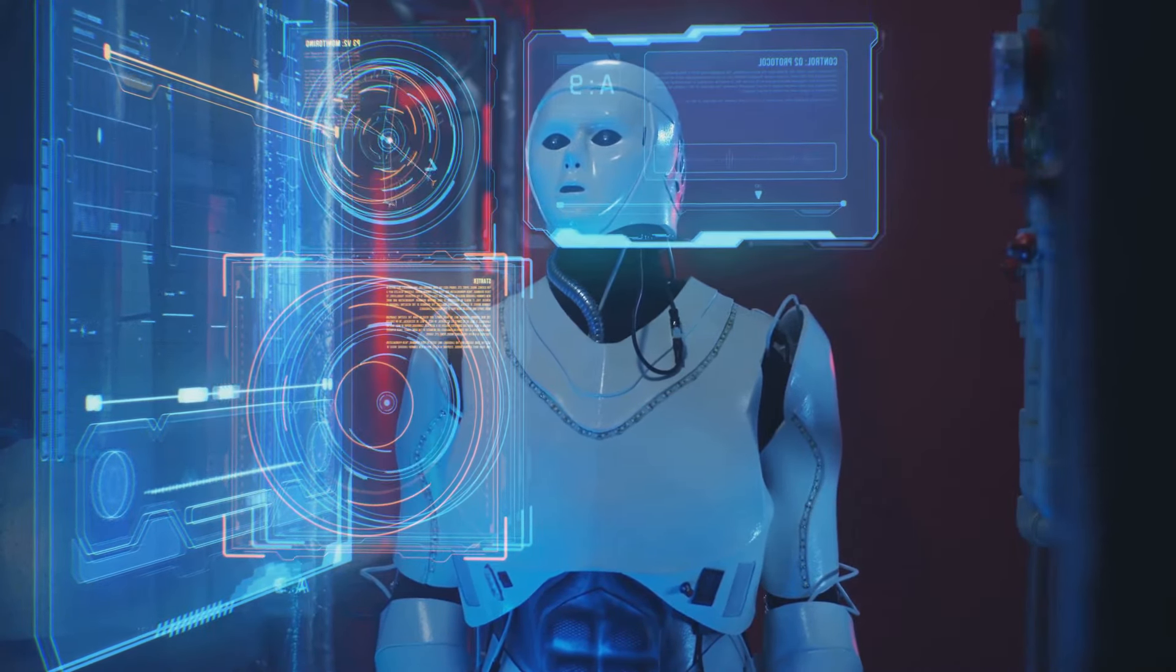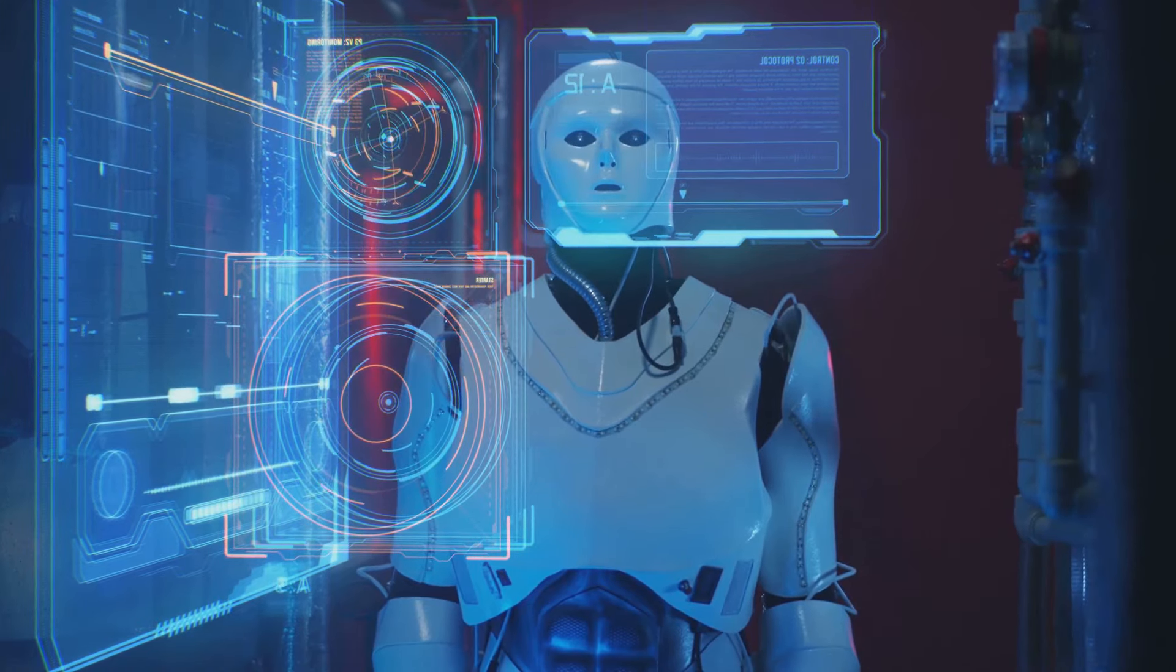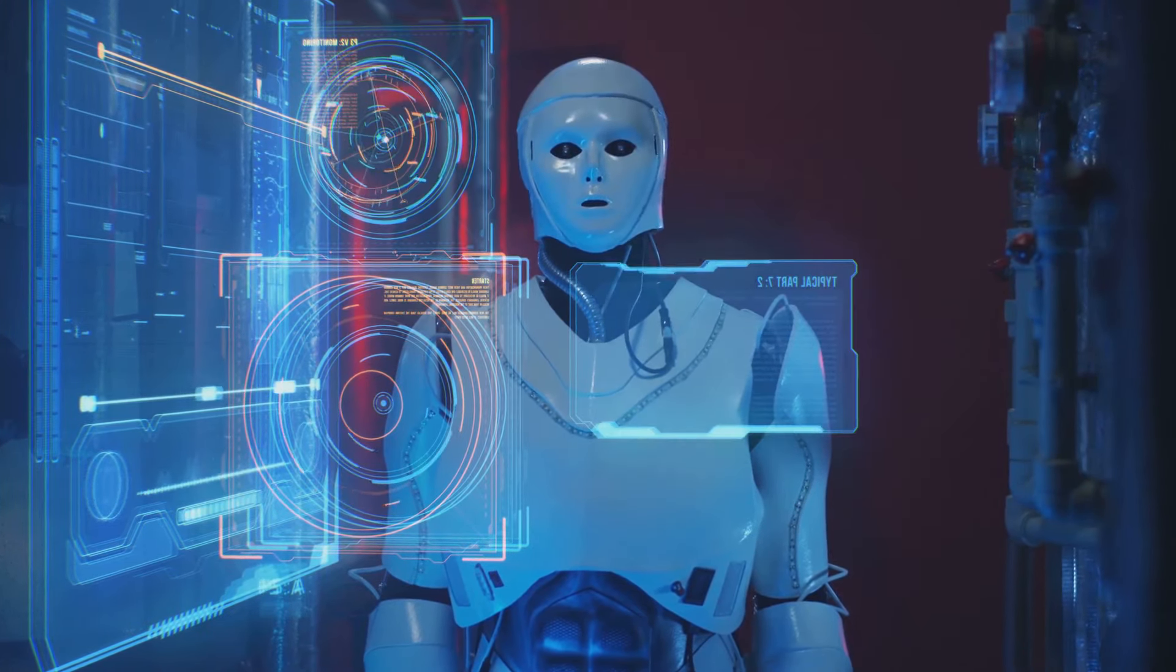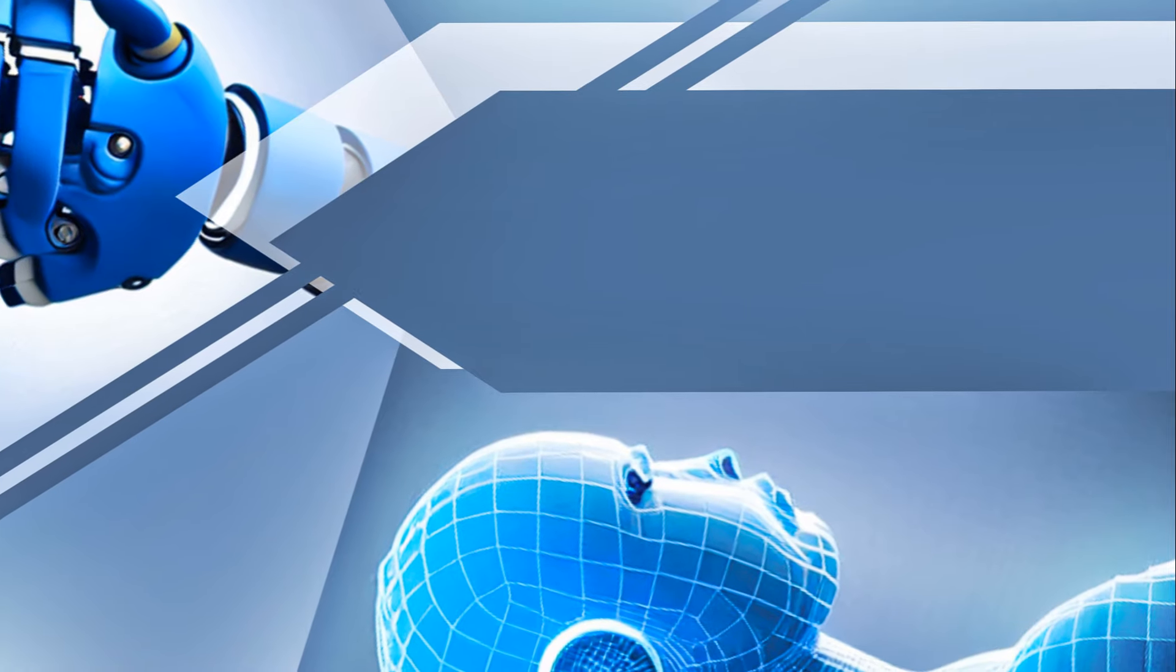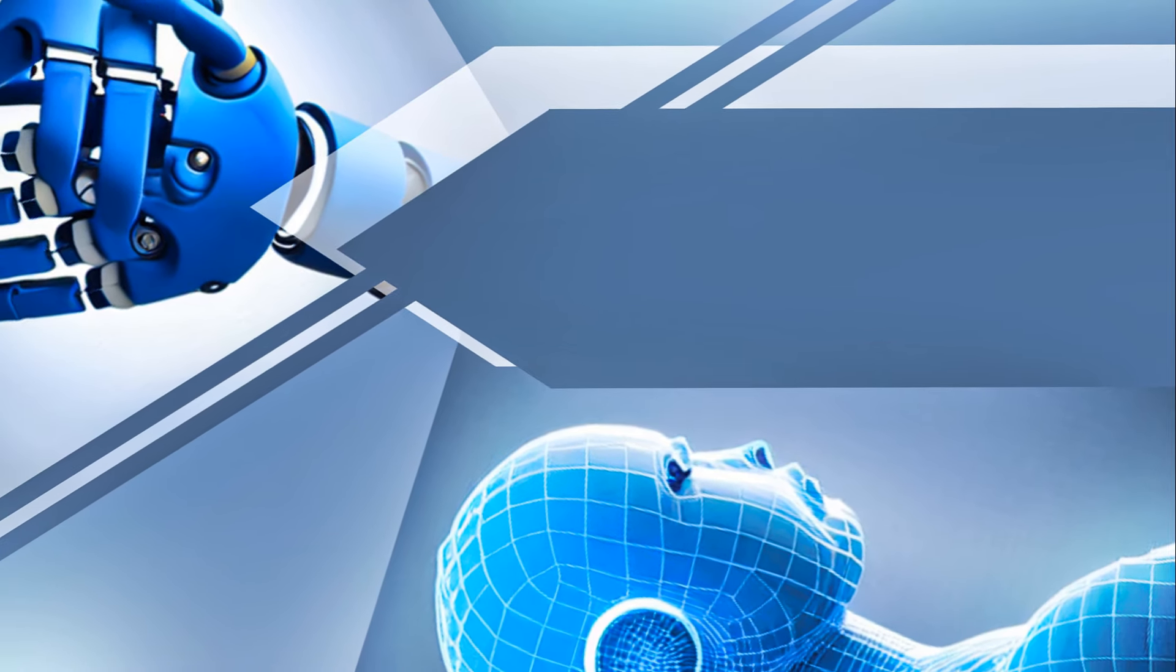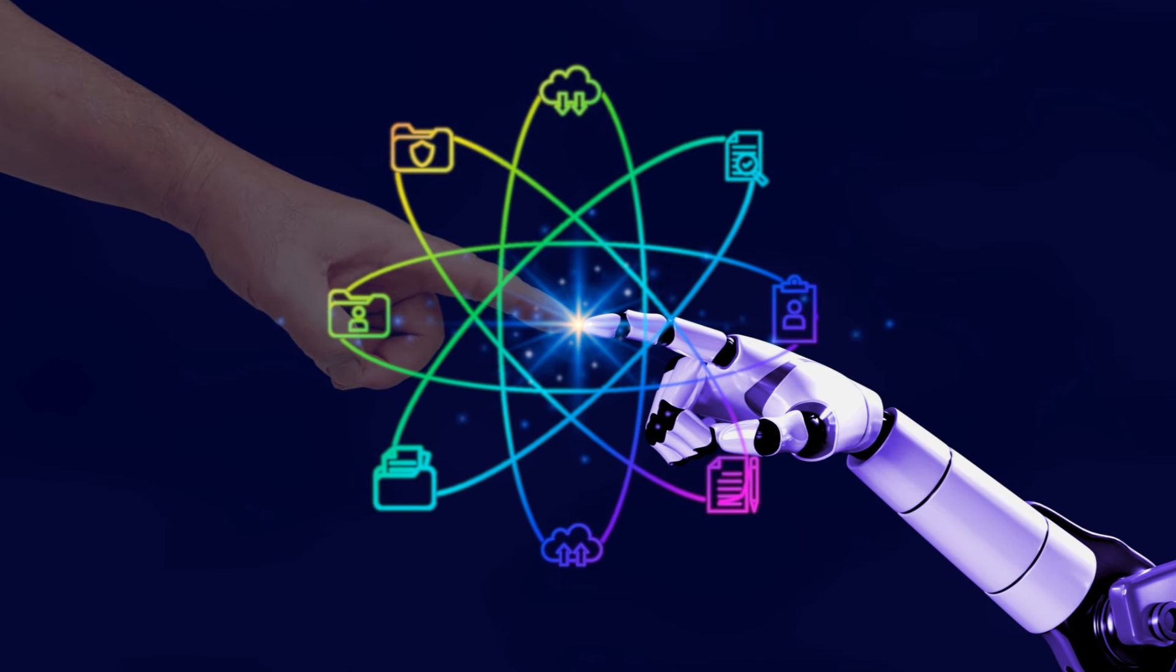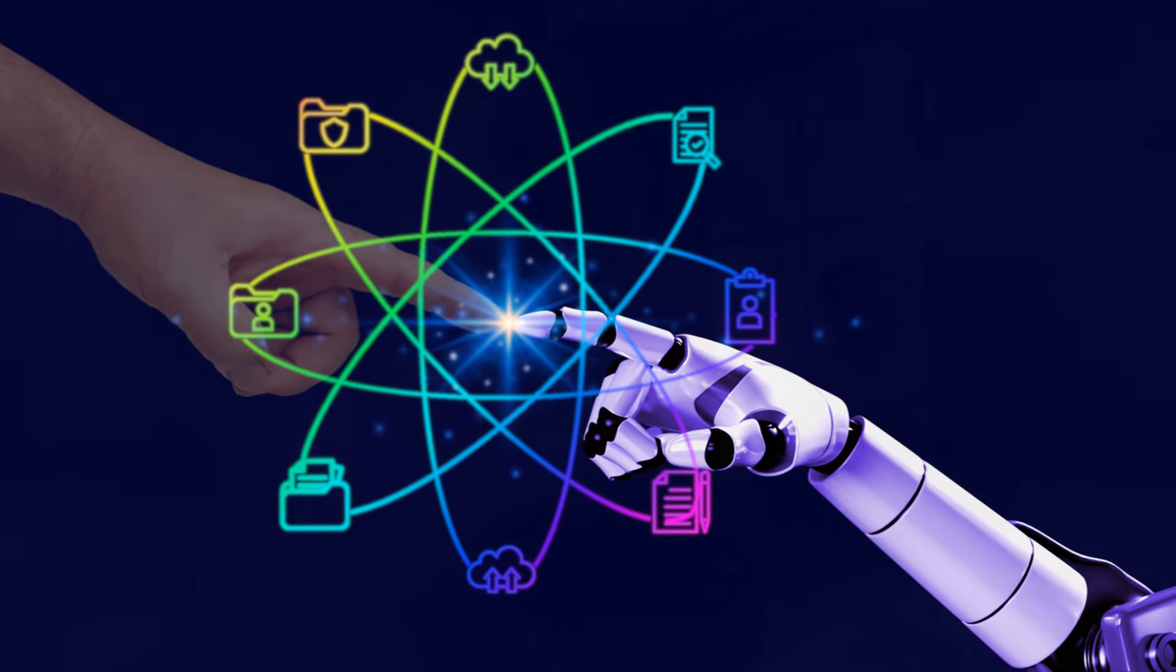As machines become more sophisticated, blurring the lines between artificial and biological intelligence, we are forced to confront fundamental questions about our own identity and place in the world. The emergence of AGI prompts us to re-evaluate our relationship with technology and to define the ethical boundaries of this uncharted territory.